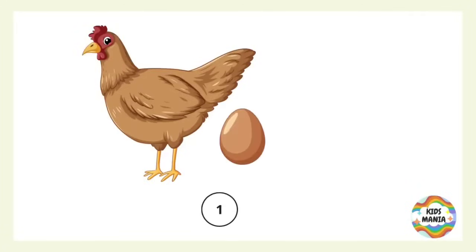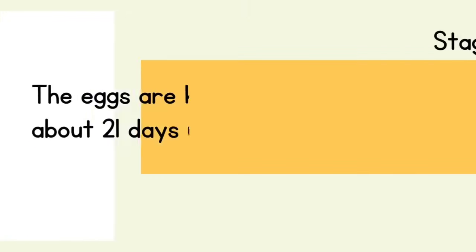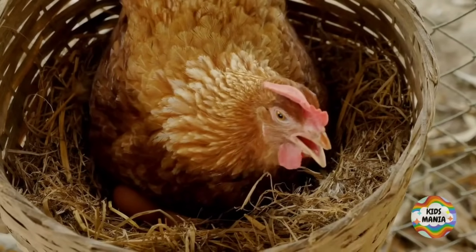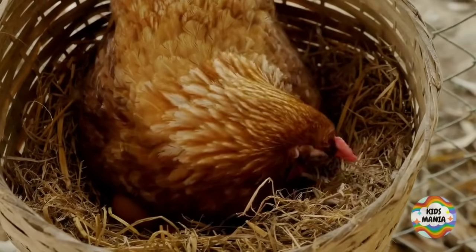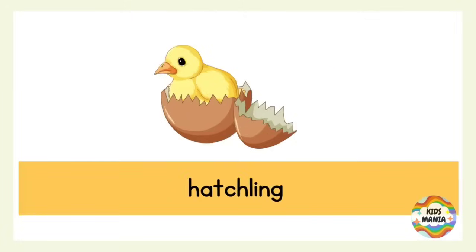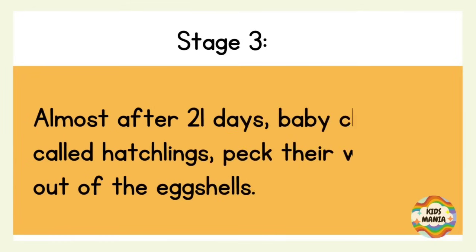This is an egg. Stage two: the eggs are kept warm and safe for about 21 days until they hatch. This is the mother hen hatching her eggs, and this is a hatchling.